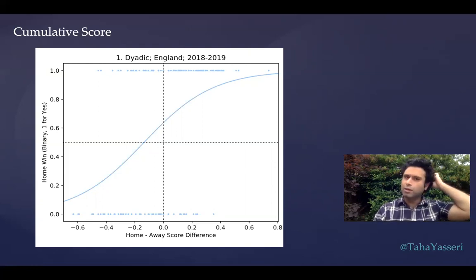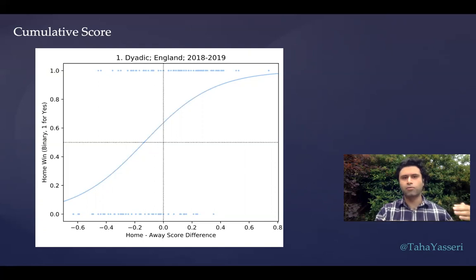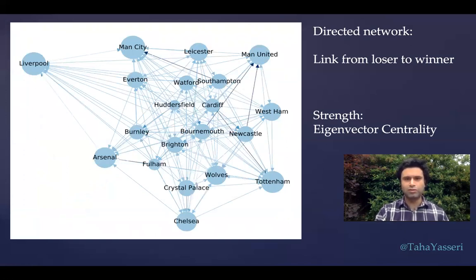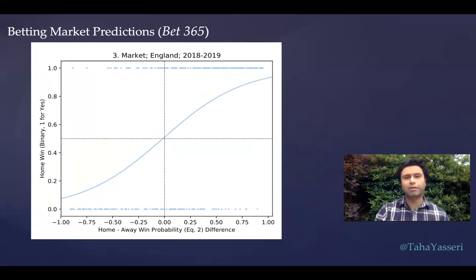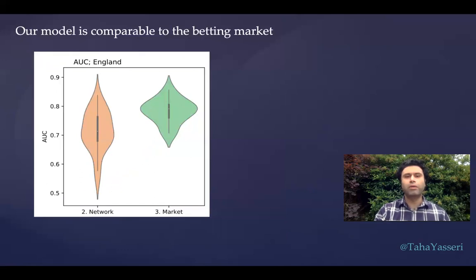One thing to note is that it's not only the number of points collected, but also against whom they collected these points. If they played against stronger teams, we should increase the weight of those points — and we can quantify opponents' strength by looking at their points and the teams they collected them from, and so on. This is basically eigenvector centrality from network analysis. You can build a directed network based on prior matches, calculate eigenvector centrality for the two teams playing today, and compare those scores before making predictions. The curve becomes slightly steeper, which indicates a better prediction.